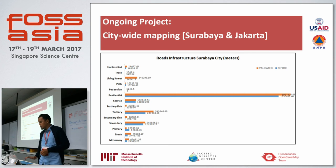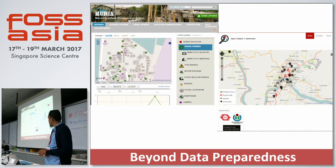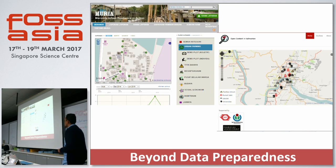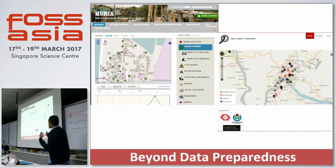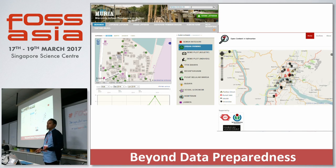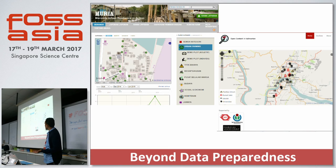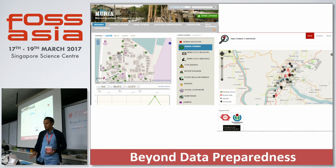For city-wide mapping, we import existing open datasets with compatible open database licenses, do remote mapping through digital aerial imagery donated by Microsoft Bing, and also do detailed attribute information collection on the ground. For Surabaya we deployed 15 data entry staff and for Jakarta we deployed 20. The data collected covers transportation, sport facilities, government buildings, and more. We believe this open data can be used for various purposes beyond disaster management — for example, we used it to track urban farming in northern Jakarta, and in Kalimantan (Borneo) in collaboration with Wikimedia through an open data project.